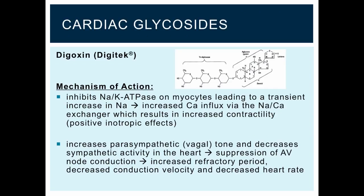Let's start off by looking at the cardiac glycosides. Digoxin is the prototype for this class. Digoxin inhibits the sodium-potassium ATPase pump found on cardiac myocytes, and this leads to a transient increase in sodium. This in turn leads to increased calcium influx via a sodium-calcium exchanger, which in turn results in increased contractility, or positive inotropic effects. Digoxin also has actions on the parasympathetic and sympathetic nervous systems — it leads to an increase in parasympathetic or vagal tone, and it decreases sympathetic activity in the heart. The decreased sympathetic activity is actually a consequence of the increased contractility.